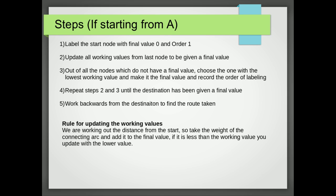Now what's important is what are the rules for updating the working values? Well, we're working out the distance from the start. So we take the weight of the connecting arc and add it to the last final value. So that means that if we've got to B, and we know the distance to B is 10, because that's its final value, and then we know from B to C is 3, if we know that we've got to go through B, the distance we put on C is 13, and it would be the 10 plus 3.